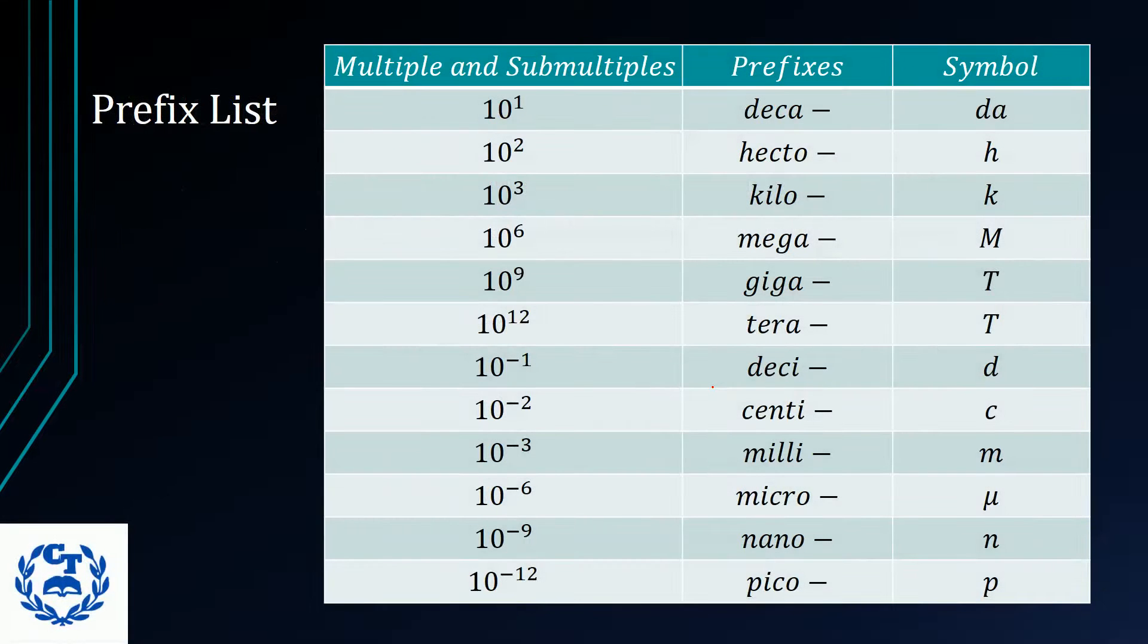In this slide, you would see the list of all the values that you could possibly have for multiples and submultiples. Now, this list of values here are called multiples because the index of the 10 is positive, and these are called submultiples because the index of the 10 is negative. Now, each one, you can see that they have the same pattern. You start from 1, you go 2, you go 3, then you go 6, 9, and 12, and you have the submultiples following the exact same pattern except it is negative.